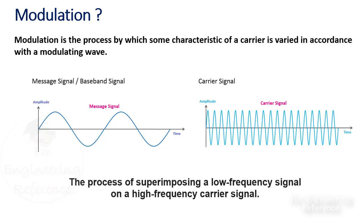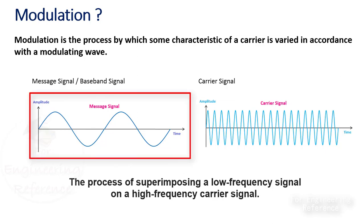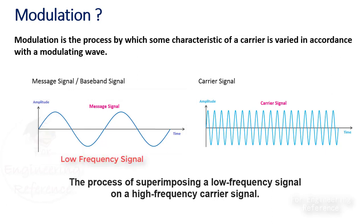Two signals are involved in the modulation process. One is the message signal and another signal is the carrier wave. Message signals are also known as baseband signals. Baseband signals are the band of frequencies representing the original signal. This is the signal to be transmitted to the receiver. The frequency of such a signal is usually low.